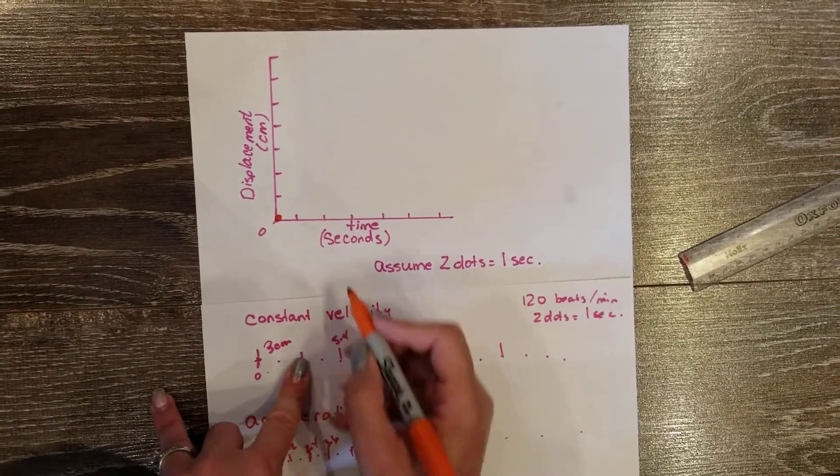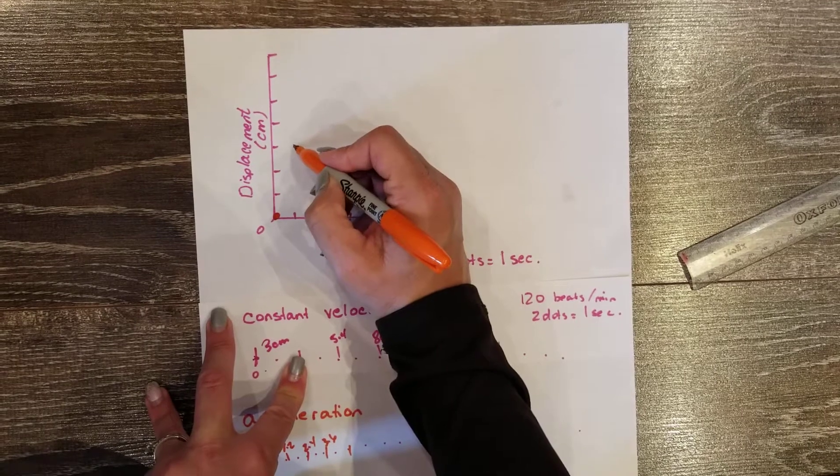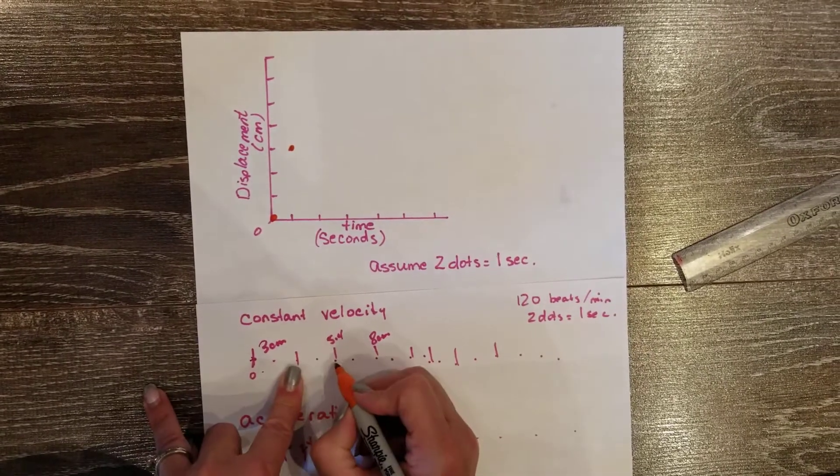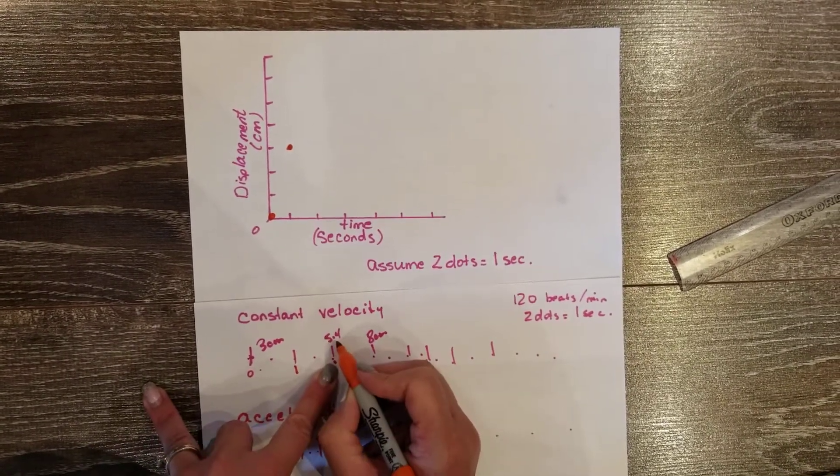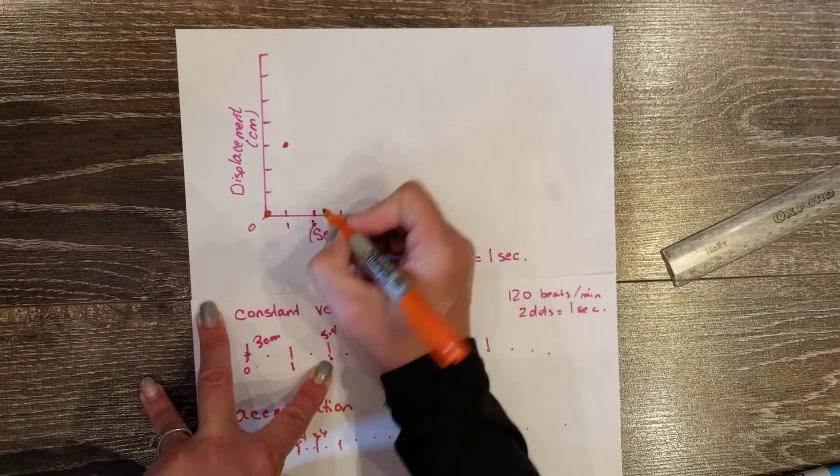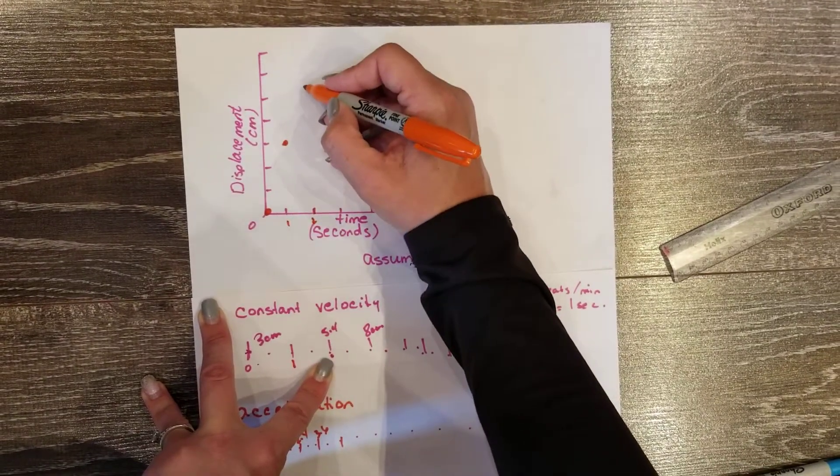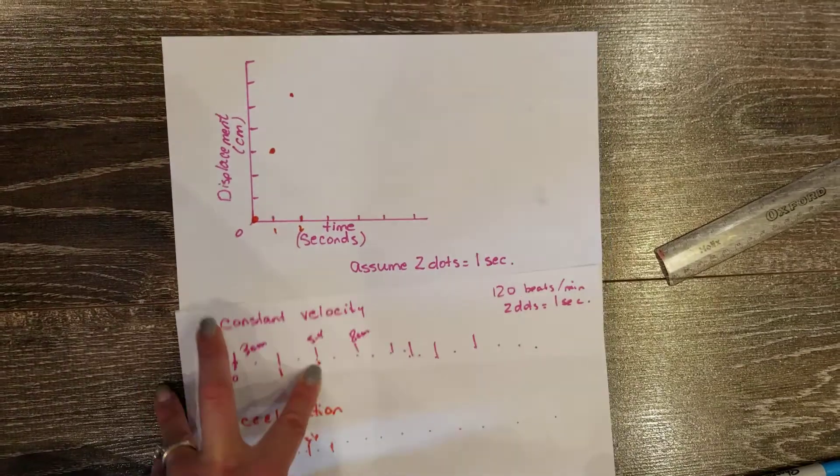After one second, I had moved three centimeters. So I'd make a dot at my three centimeters. After two seconds, I was at 5.4 centimeters. So at two seconds, I'll go up to 5.4 centimeters. And so on.